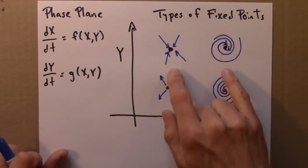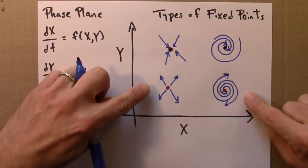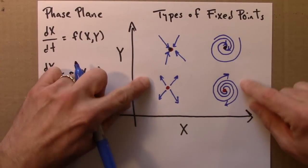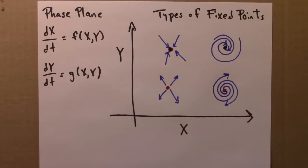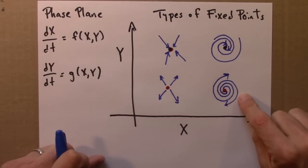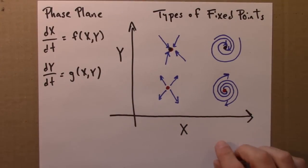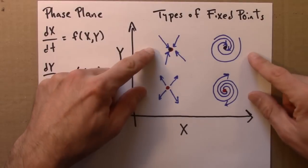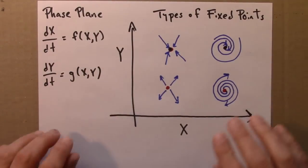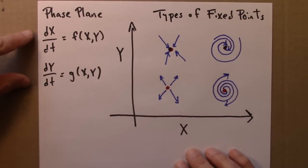So these are repellers, these are attractors. These are sometimes called sinks and these sources. This terminology is a little more common in looking at two dimensional differential equations. And one might call this a spiral sink and this a spiral source. Source because it's a source of lines. Lines are coming out of it. In any event, these are the four different types of fixed points you can have for a differential equation of this form.